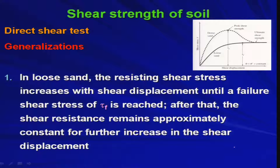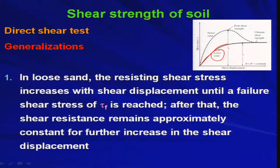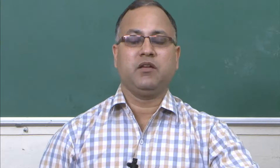Now we are going to discuss the stress-strain behavior for loose sand as well as dense sand. In loose sand, the resisting shear stress increases with shear displacement until a failure shear stress of tau_f is reached. After that, the shear resistance remains approximately constant for further increase in shear displacement. This is the typical behavior for loose sand — you reach peak shear resistance tau_f and beyond that it becomes almost constant.